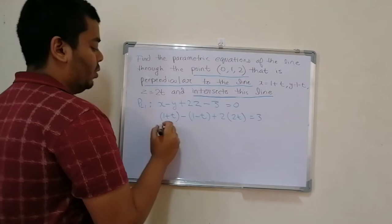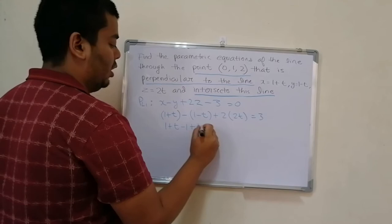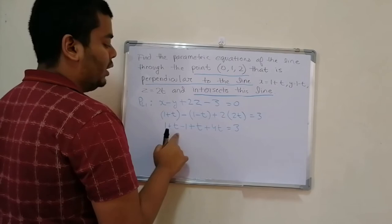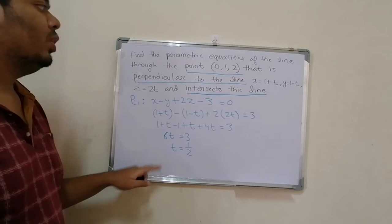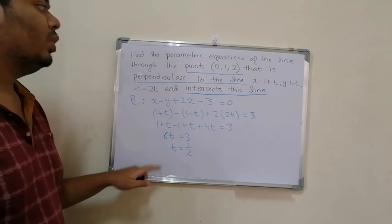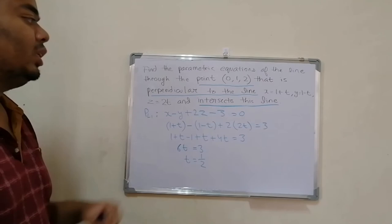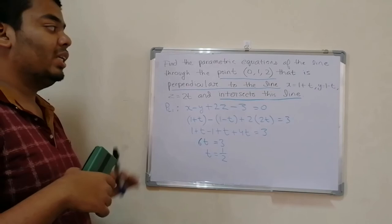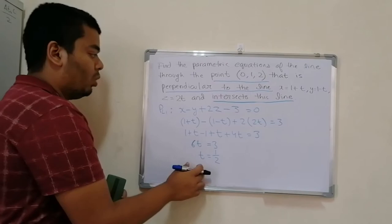Simplifying: t + t + 4t = 6t, and 1 - 1 = 0, so 6t = 3, giving t = 1/2. Now we need to find another point on the given line using t = 1/2. When we substitute t = 1/2 into the given line's equations, we get the coordinates of the intersection point common to both the given line and the line we want to find.